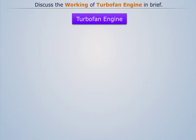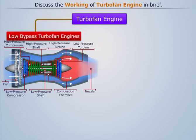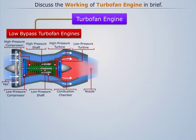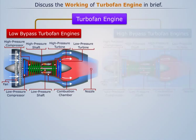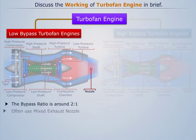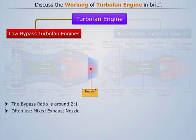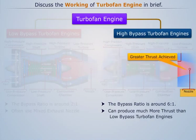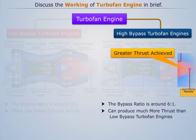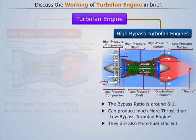Turbofan engines are mainly of two types: low bypass turbofan engines and high bypass turbofan engines. In low bypass turbofan engines, the bypass ratio is around 2:1, and they often use a mixed exhaust nozzle. In high bypass turbofan engines, the bypass ratio is around 6:1. They can produce much more thrust than low bypass turbofan engines because of the large mass of air that the fan can accelerate, and they are also more fuel efficient.